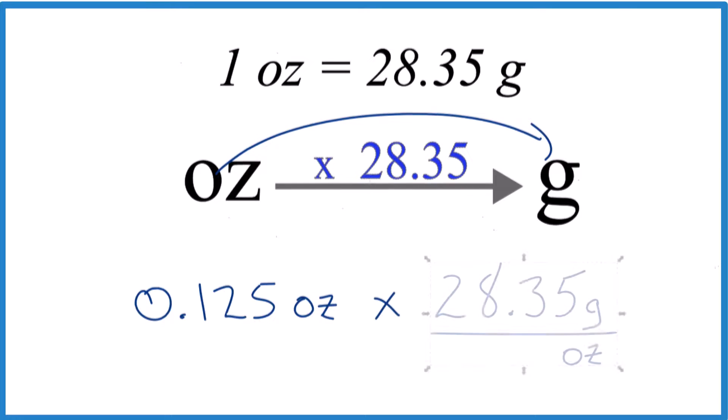So we're going to multiply like this. It's nice because we have ounces on the top and the bottom, they cancel out. We're left with grams, which is what we're looking for.